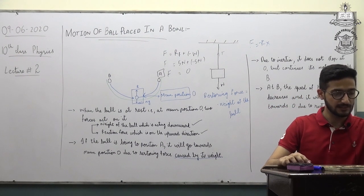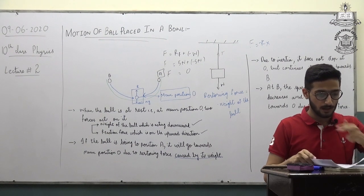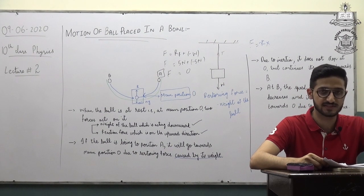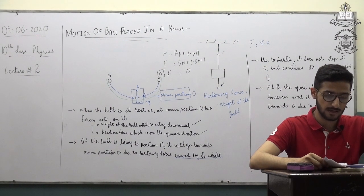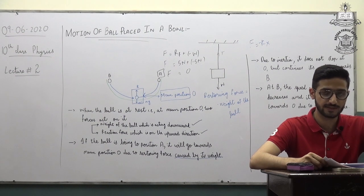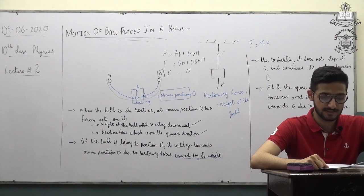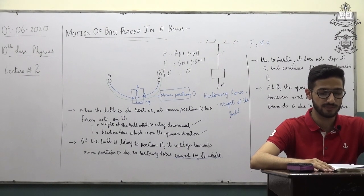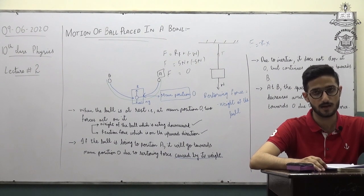Now moving towards the notes — I hope that just like the last lecture, you have taken out your notes. If you open page number seven, we have the second long question: 'Define SHM (Simple Harmonic Motion) and prove that the motion of a ball in a bowl is Simple Harmonic Motion.' First, write the definition of Simple Harmonic Motion: Simple Harmonic Motion occurs when the net force is directly proportional to the displacement from the mean position and is always directed towards the mean position.